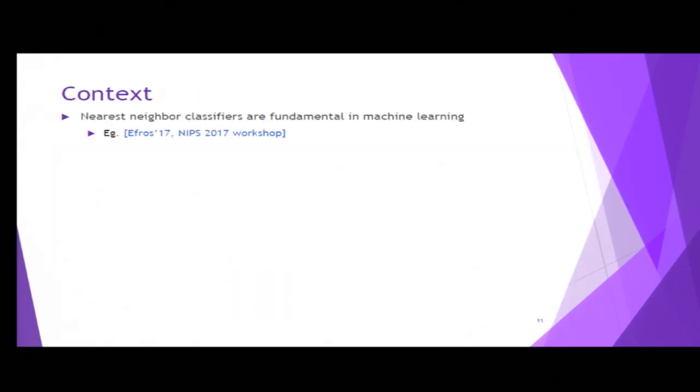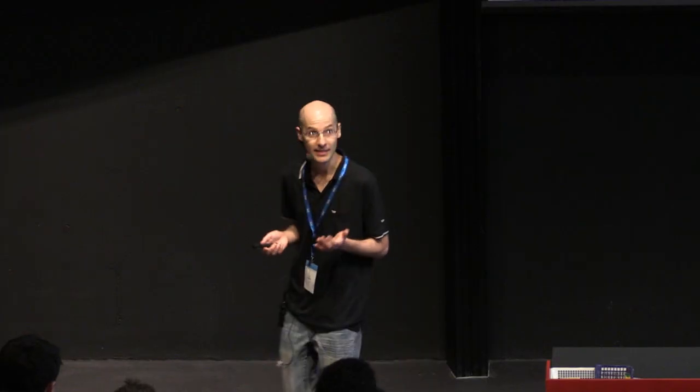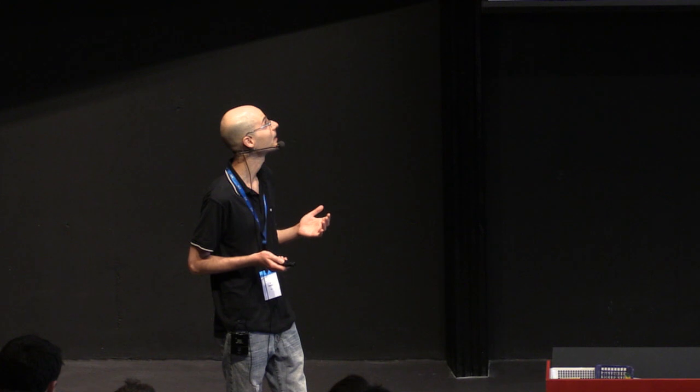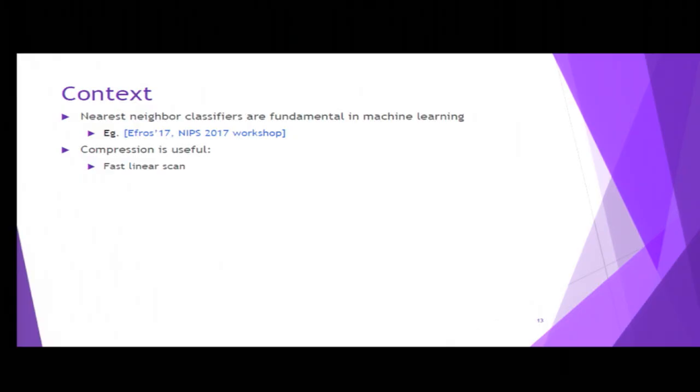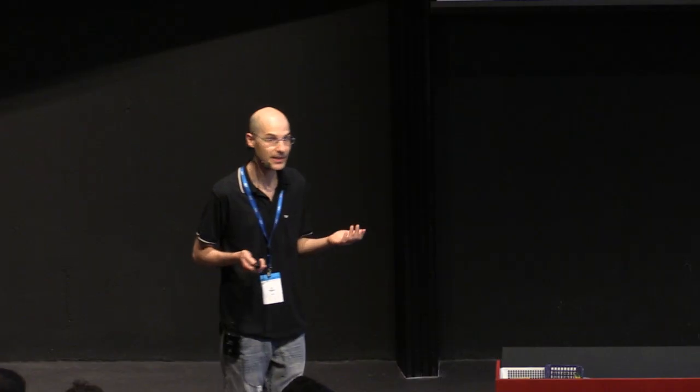Why do we care about it? First, nearest neighbors are fundamental to machine learning. For example, in the last NIPS there was a whole workshop on this. Why do we care about compression? If the representation of the data is more efficient, then hopefully linear scan is going to be faster, and pretty much every nearest neighbor algorithm uses linear scan, at least on subsets of the data, like LSH buckets.